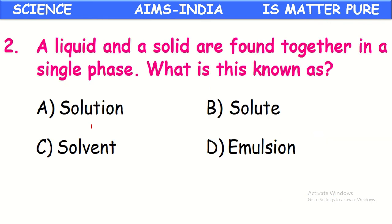Next question: A liquid and a solid are found together in a single phase — what is this known as? If a mixture contains both solid and liquid existing in the same single phase, that is called a solution.